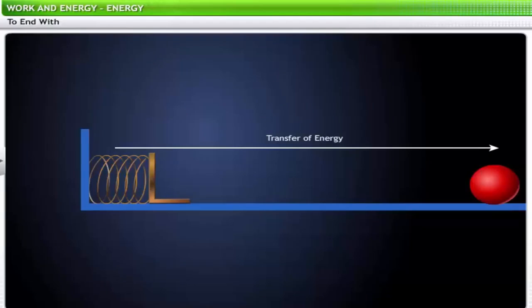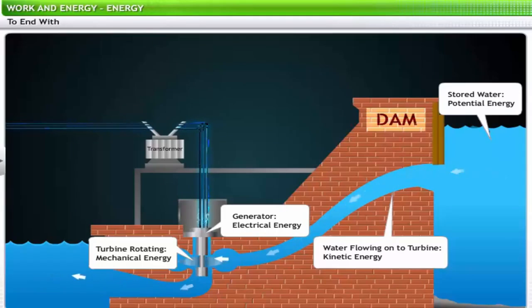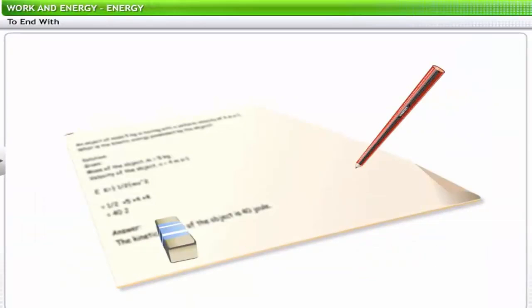This brings us to the end of this lesson on energy. In this lesson, you learned about the significance of energy, various types of energy, and how to calculate the energy of an object. The section on solved problems provides an opportunity to review model problems based on these concepts. To revisit the key points covered in this lesson, please review the flashcard.